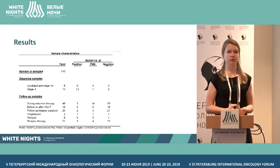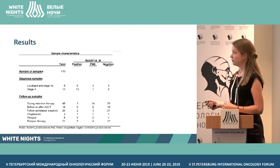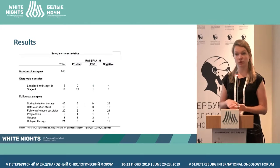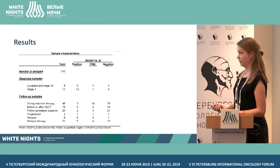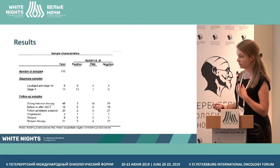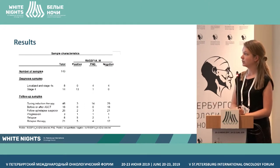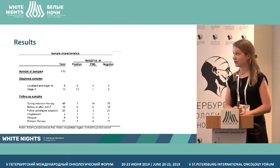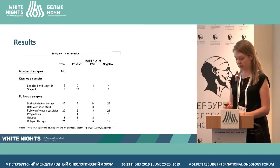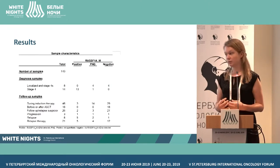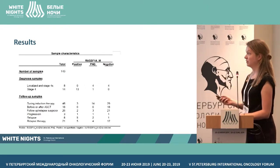We tested RASSF1A qPCR in triplicates. If positive in triplicate, we called it truly positive; if positive in only one or two replicates, we called it positive but not quantifiable. We tested 143 samples. All stage 4 patients at diagnosis were positive. For the localized stage 4S patients, half were positive though not quantifiable, and half were negative — noting that we could not detect RASSF1A hypermethylation in all localized tumors to begin with.